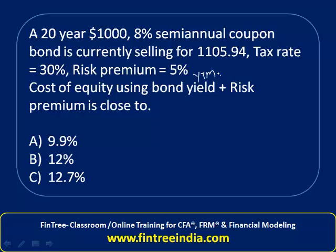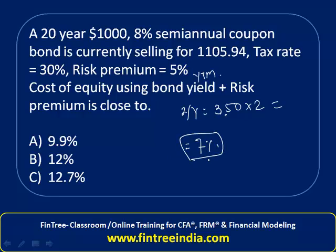Compute IY. The result comes out to 3.50. However, this is the yield earned every six months, so to calculate the annual YTM we multiply by 2, which gives us 7%.